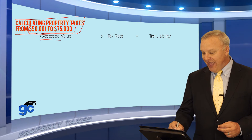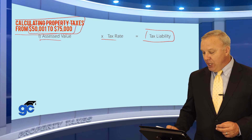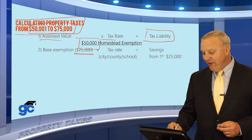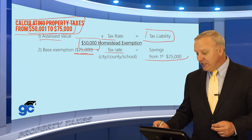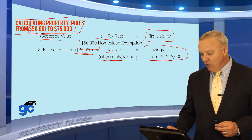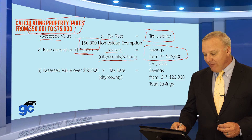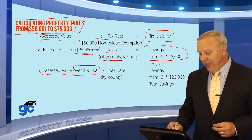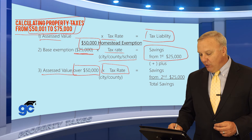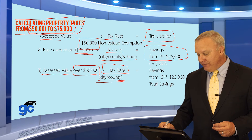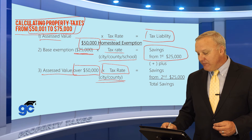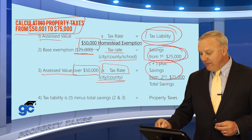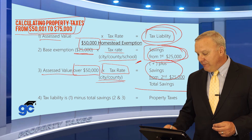Again, assessed value times tax rate would be your tax liability. But this property has $50,000 in homestead exemptions. You take your base exemption of $25,000 times the tax rate to get your savings from the first exemption — notice this applies to city, county, and school board. Plus you have your second exemption on the assessed value over $50,000, so any part between $50,000 and $75,000 times that tax rate. Notice, though, it only applies to the city and the county, not to the school board. Your savings from the first plus savings from the second equal your total savings, which you subtract from your tax liability to give you your property taxes due.